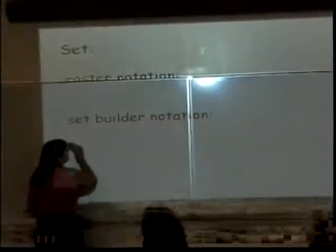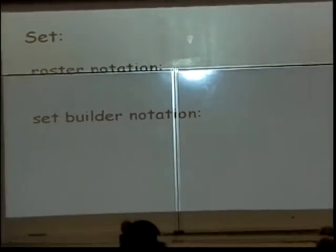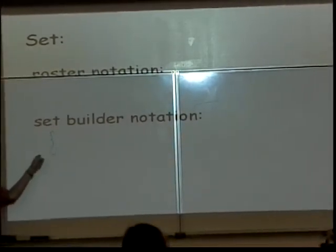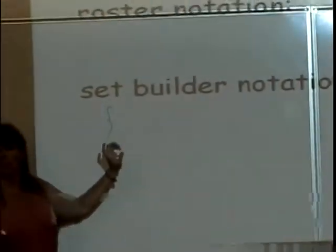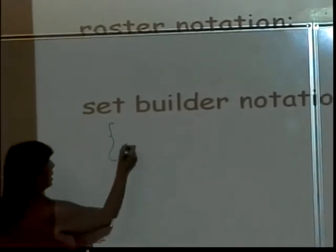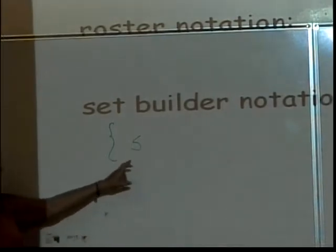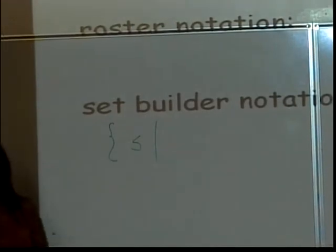So instead of writing them all down, I could use something called set builder notation. And the way set builder notation works is I start with my set bracket. And then I pick a variable. It doesn't matter which variable I pick. I'm going to go for S because we're talking about students. But you can pick any variable. And then the next part of set builder notation is a straight line, which is read as such that.